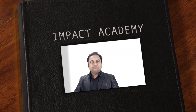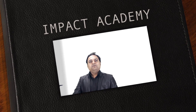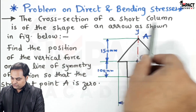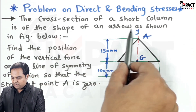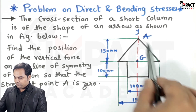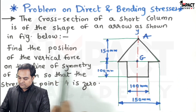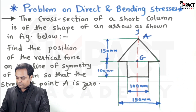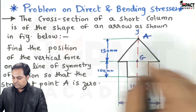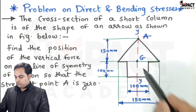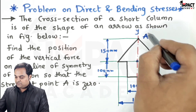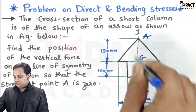In this video we are going to see a problem on direct and bending stresses. The cross section of a short column is in the shape of an arrow as shown in the figure. The cross section is symmetric about the y-axis. We have to place the load on the y-axis so that the stress at point A is zero.